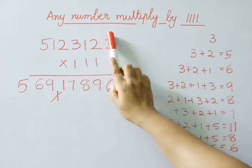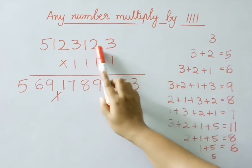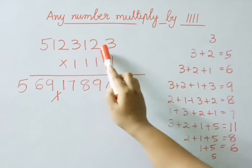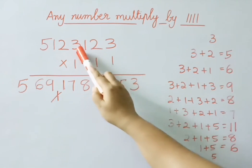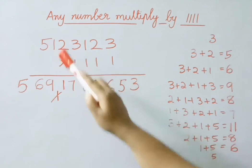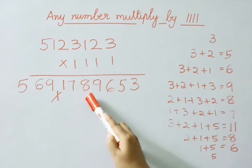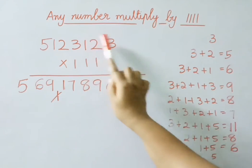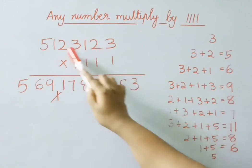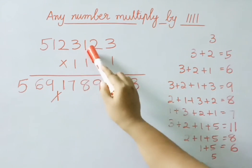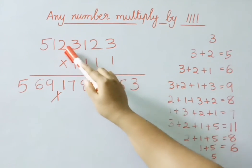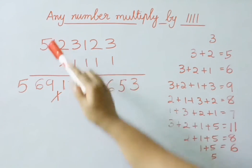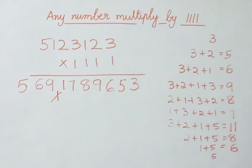Now leave this digit and add 4 digits: 2 plus 1 is 3, 3 plus 3 is 6, 6 plus 2 is 8. Now leave these 2 digits and add 4 digits: 1 plus 3 is 4, 4 plus 2 is 6, 6 plus 1 is 7.